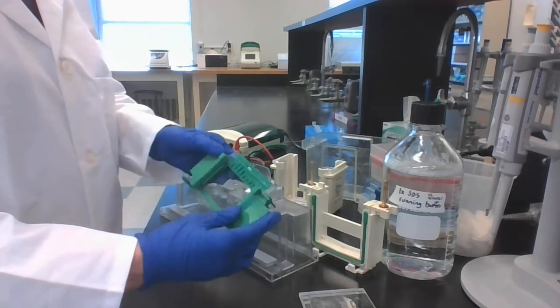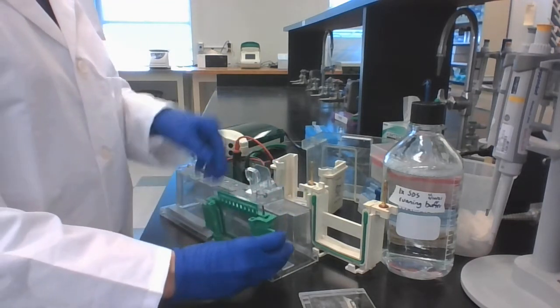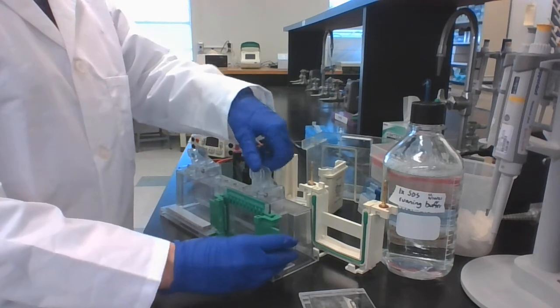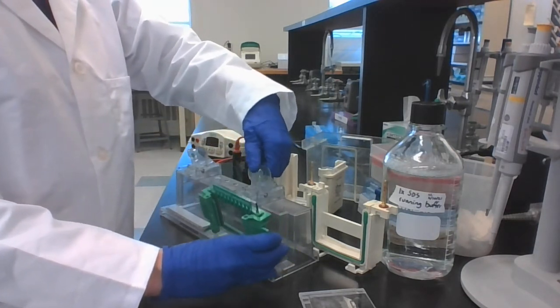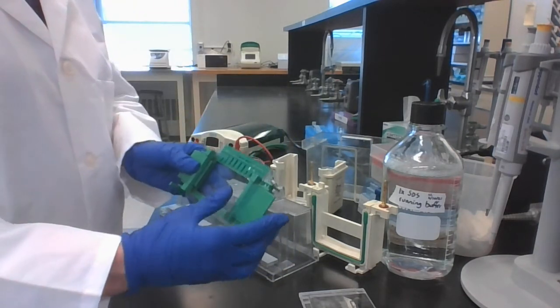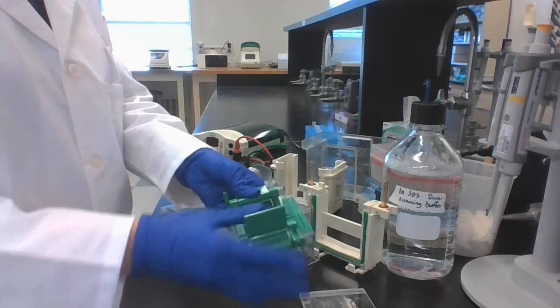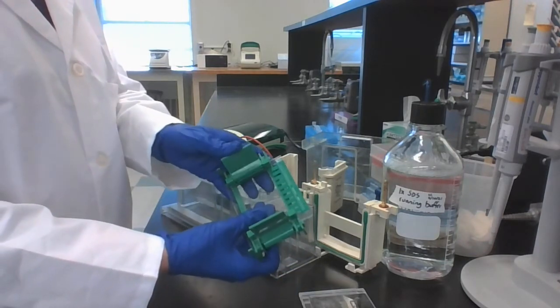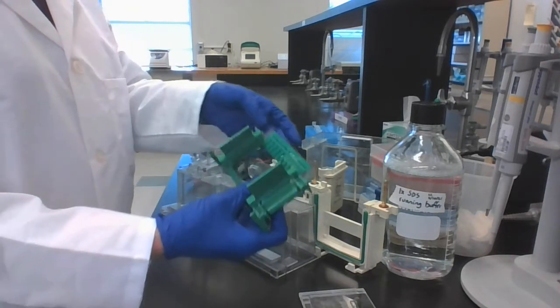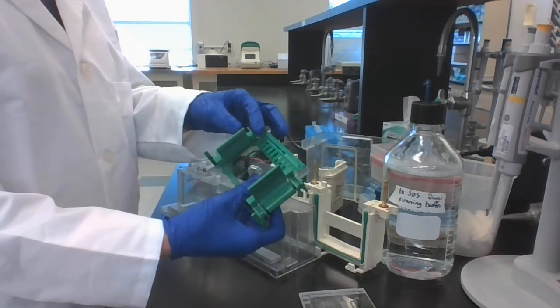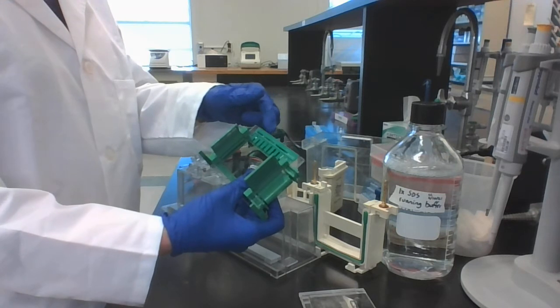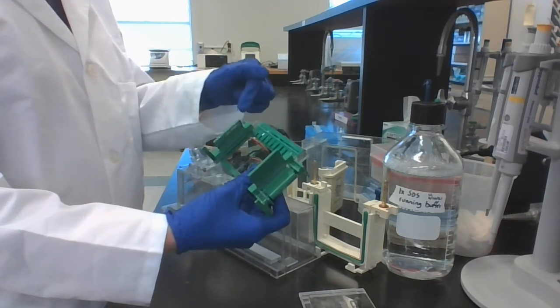Now that we have our completely polymerized gel, you can take it out of this frame, this clamp, by just loosening it and taking it straight out. You also want to take it out of the green frame, so to do that, you open the door. Make sure that you're holding on to it, because once the doors are open, these glass plates can just slide out. Don't let that happen to you.